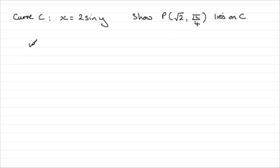So, let's start off by saying that when y equals pi upon 4, what will x be? Well, we're substituting into the equation, and we've got 2 sine of pi upon 4.